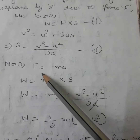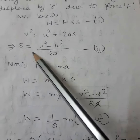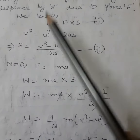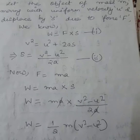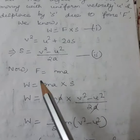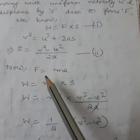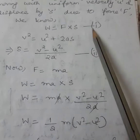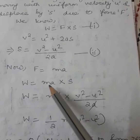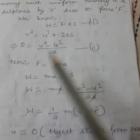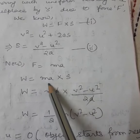We have to put the value of F and s in equation 1, because work done is equal to F into s. So F is equal to ma. Putting the value of F and s in the first equation: W is equal to F into s, and the value of F is m into a, so W is equal to m into a into s.